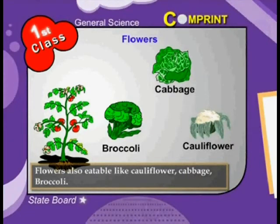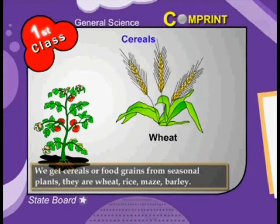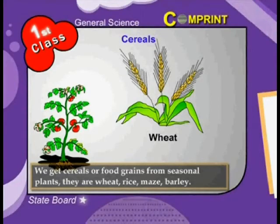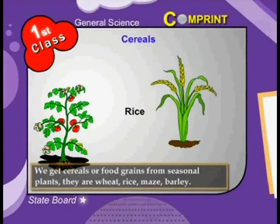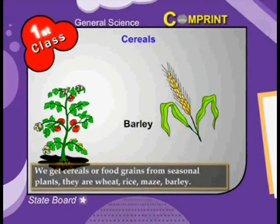Flower vegetables that are edible include cauliflower, cabbage, broccoli, and so on. Cereals: we get cereals or food grains from seasonal plants. They are wheat, rice, maize, and barley.